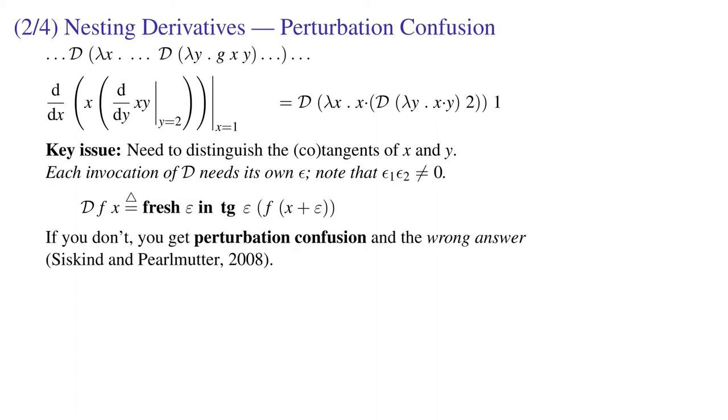Look at the definition of D. Now there's this fresh thing that there wasn't before. That means we get a fresh epsilon every time we invoke D. So that nested invocations have different epsilon tags, and so their tangents don't collide. That's critical to getting the right answer.